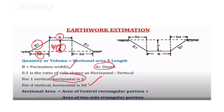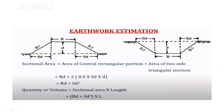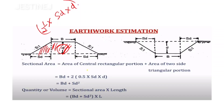The sectional area is obtained as the area of the central rectangular portion plus the area of the two triangular portions on either side. The rectangular area is b multiplied by d. Each triangular area is half multiplied by s×d multiplied by d, and since there are two such triangles, you multiply by two.